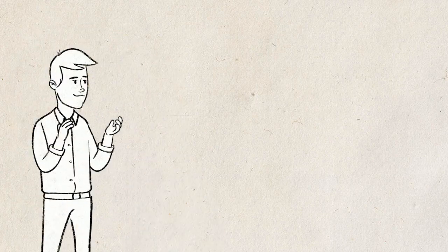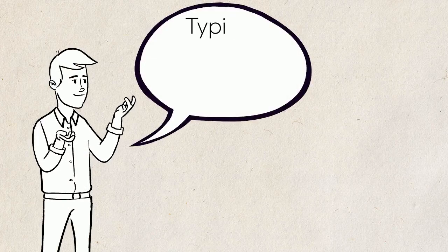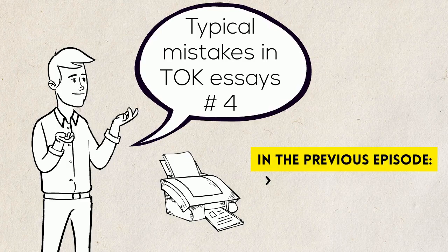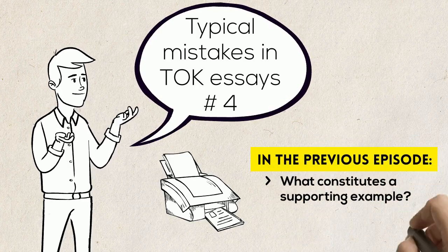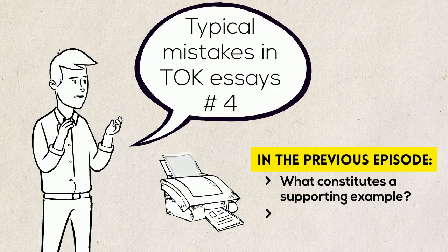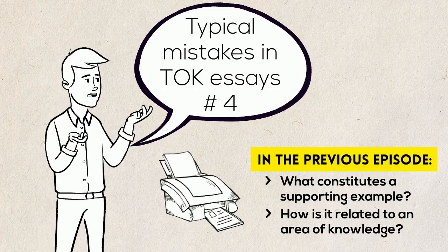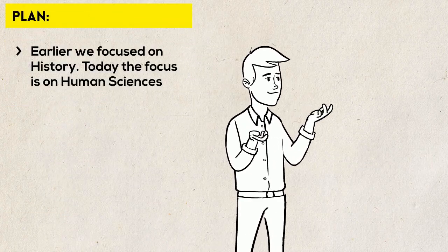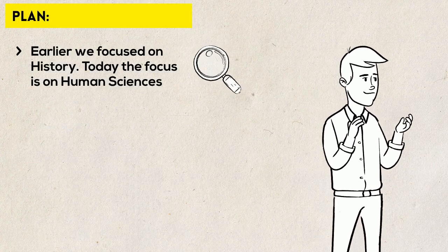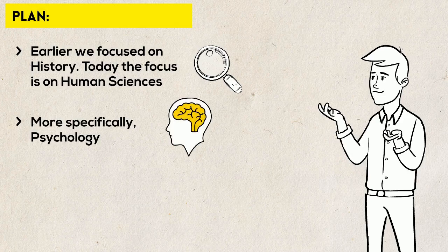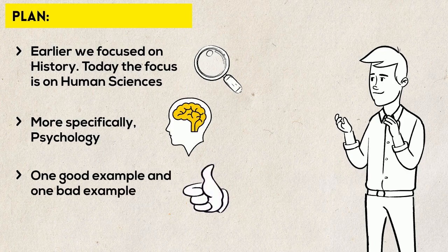Hello. This video continues our collection of videos about typical mistakes in TOK essays. In the previous episode, we explained what constitutes a supporting example in TOK and how sometimes it may look like an example is related to an area of knowledge when in fact it isn't. We used history as an area of knowledge to illustrate this. In this video, I will continue with the same logic, but this time I will focus on human sciences — more specifically, psychology. I will show you one good example and one bad example of using knowledge from psychology to support your arguments in a TOK essay.